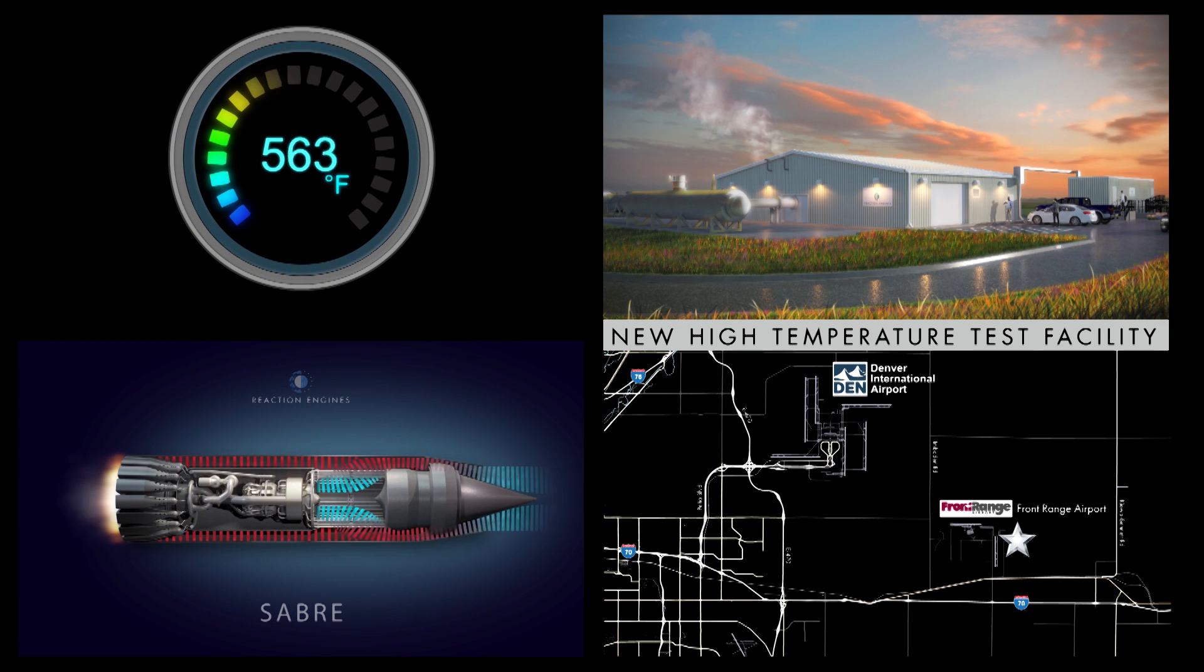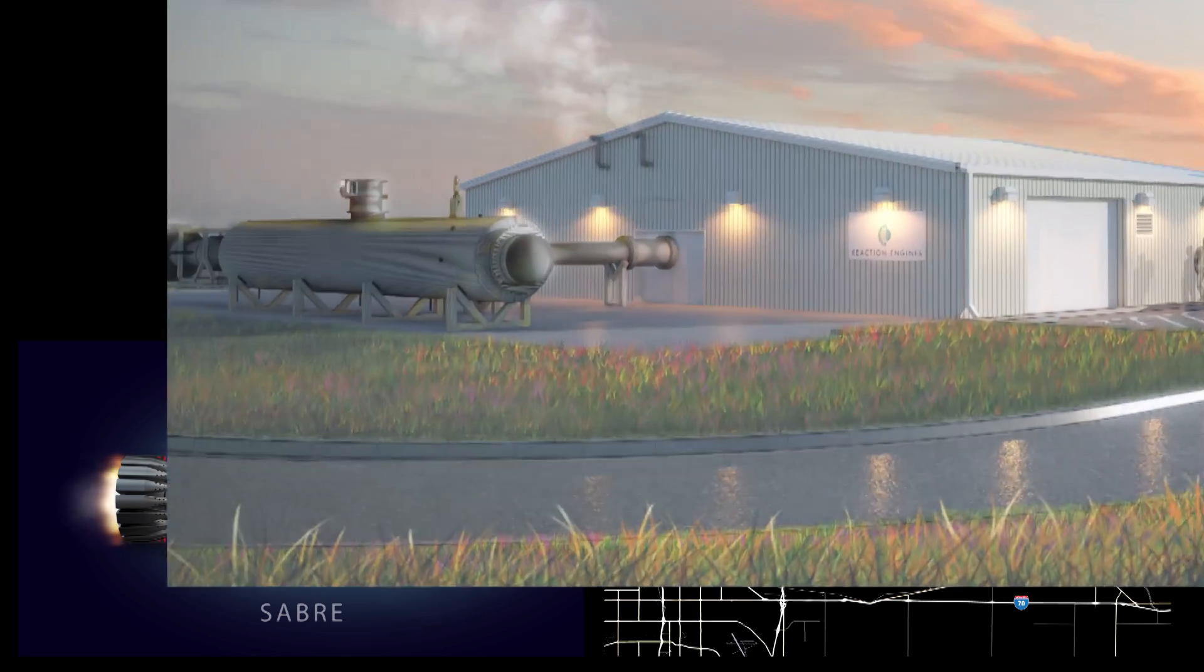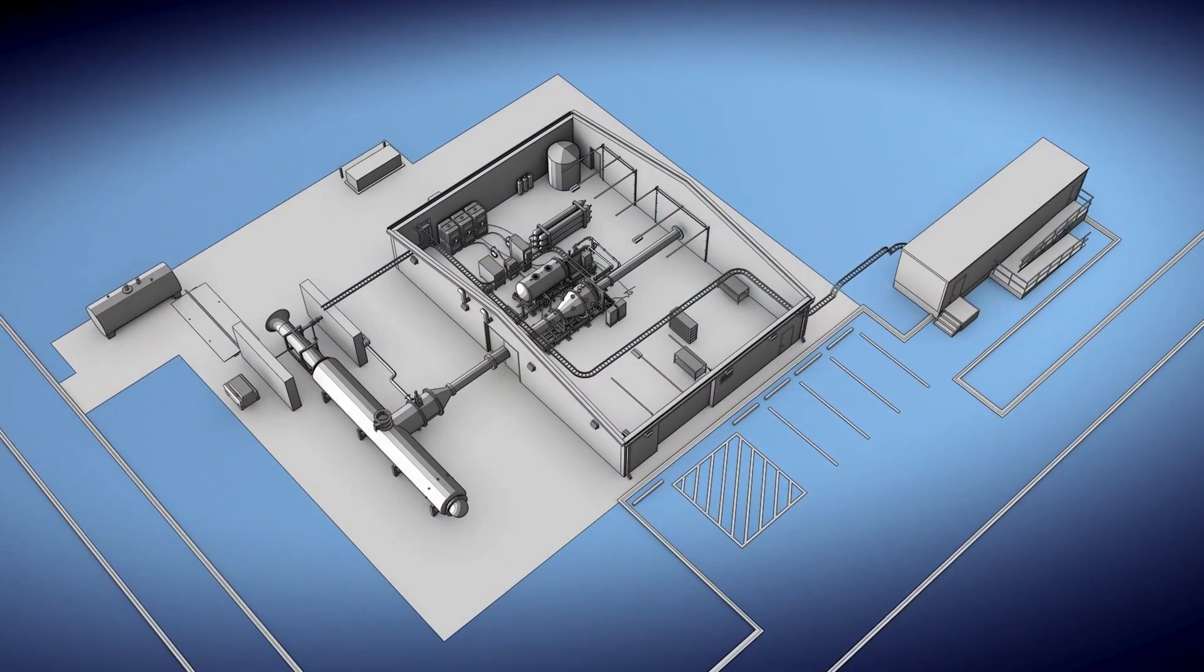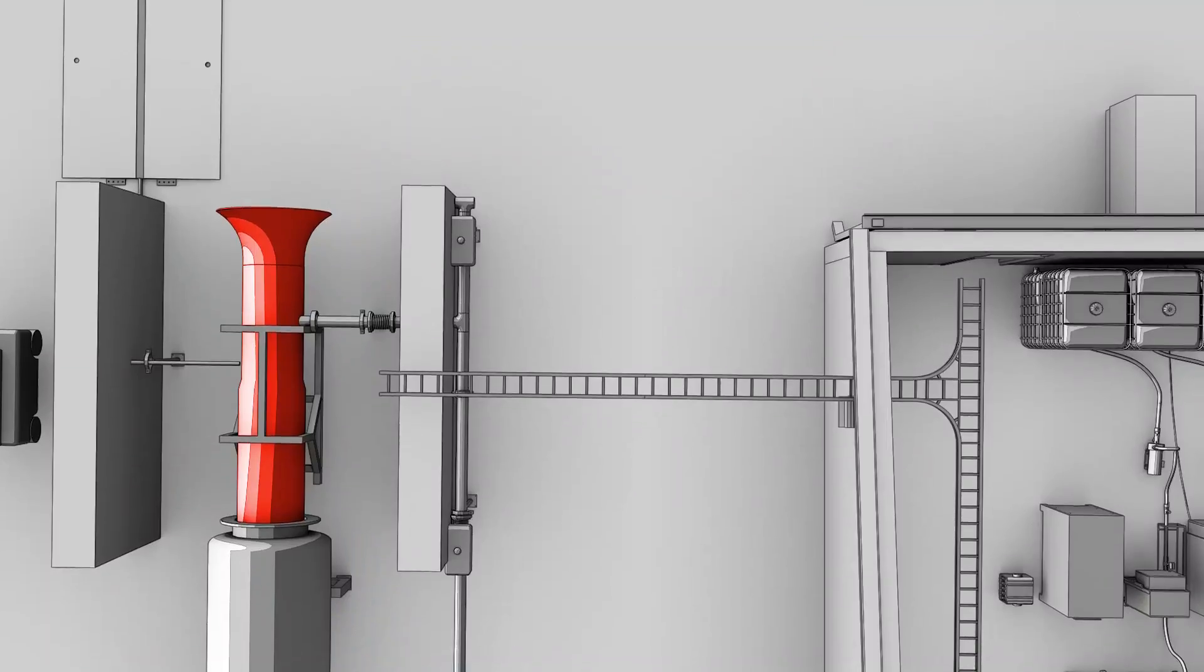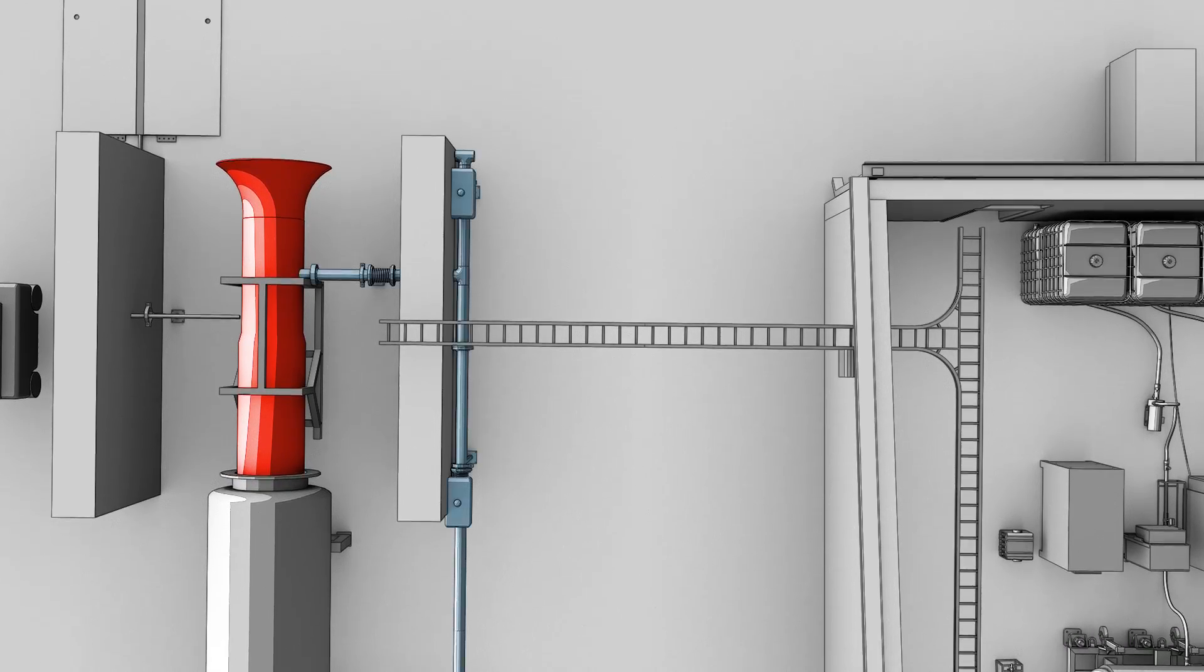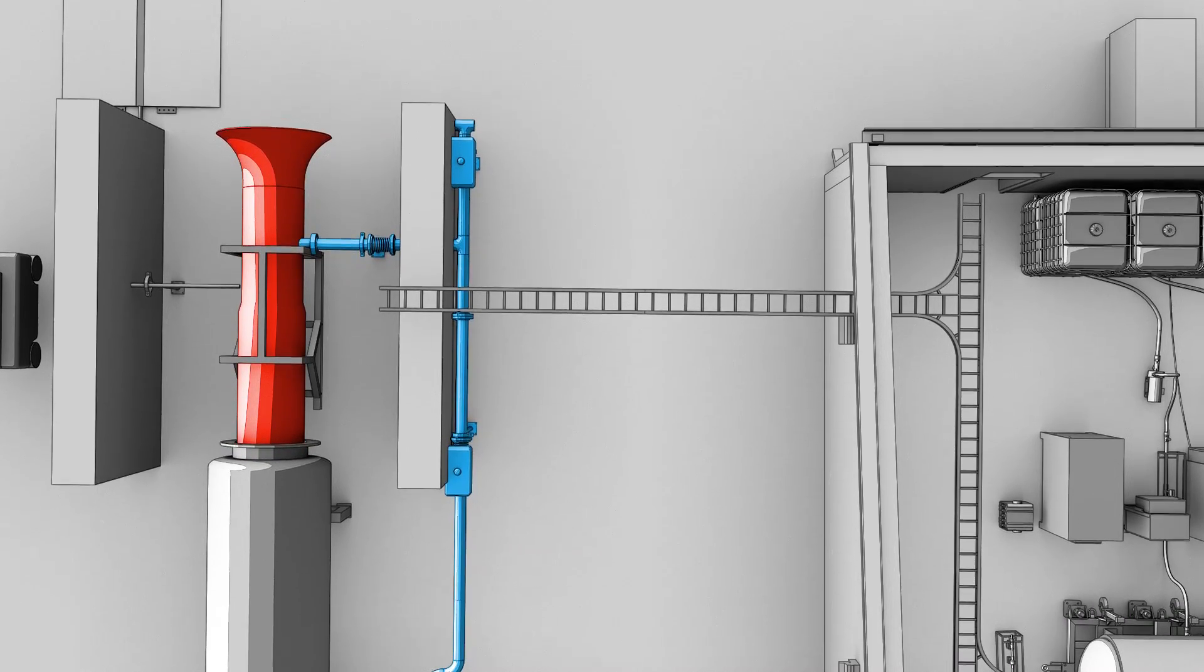In partnership with DARPA, airflow temperatures will be tested at hypersonic flight levels up to 1800 degrees Fahrenheit. The facility utilizes an afterburning turbojet engine as the source of air mass flow, with air flows being harnessed from both the compressor bleed and the afterburner exhaust as needed.